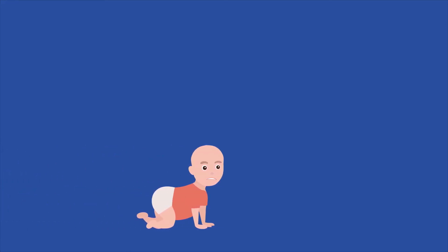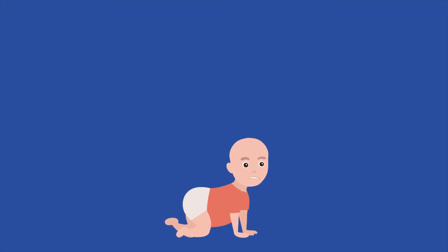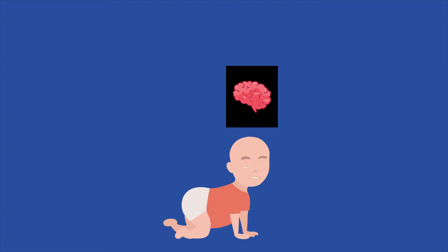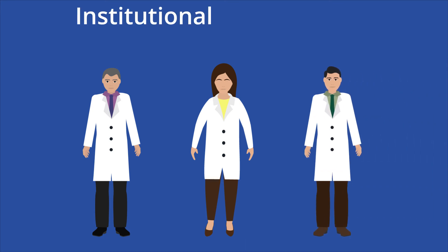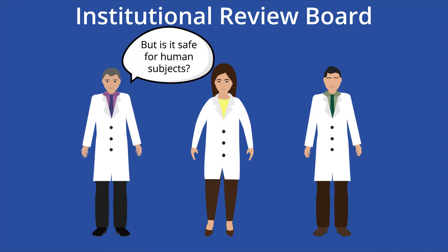This experiment is considered very unethical. The researchers failed to decondition Albert to the stimuli he was afraid of, which should have been done after the experiment. Albert ended up passing away at the age of 6 due to hydrocephalus, a condition that can lead to brain damage. Despite knowing the child's health condition, Watson continued the experiment. Today, an experiment like this would not be approved by the Institutional Review Board, which protects the rights of human research subjects. The experiment caused a young child a lot of discomfort and fear, and Albert's health condition might have deteriorated faster by undergoing this stressful experiment.